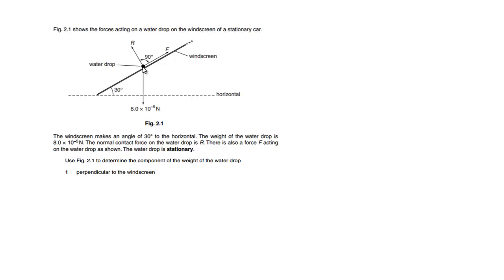To do this, let's draw on our diagram where these two components are going to be. Here we have the perpendicular component and here we have the parallel component of the weight. We don't know these angles up here but we can easily deduce them. This angle here completes a right angle triangle, so if that angle is 30 degrees, this one here must be 60 degrees.